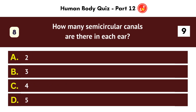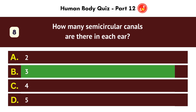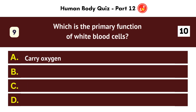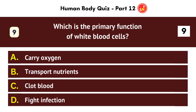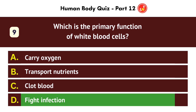How many semicircular canals are there in each ear? Three. Which is the primary function of white blood cells? Fight infection.